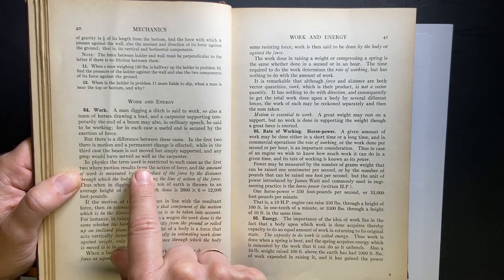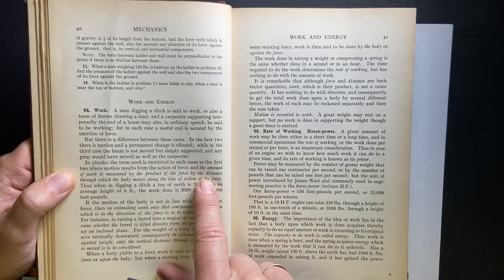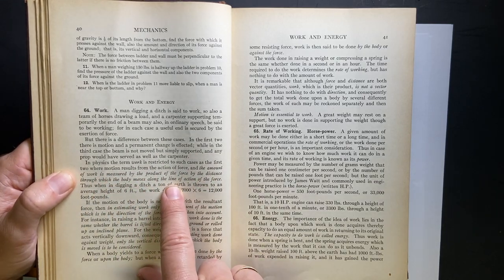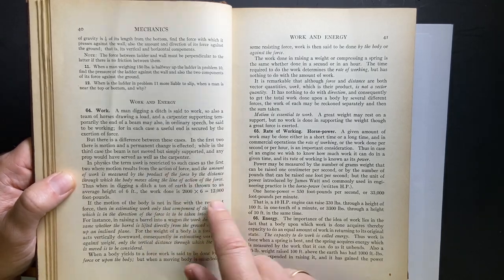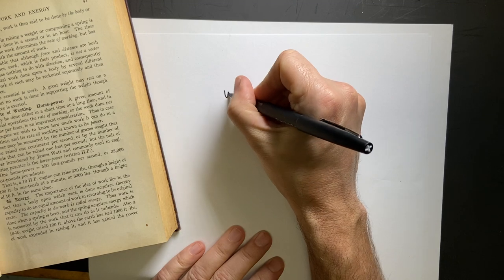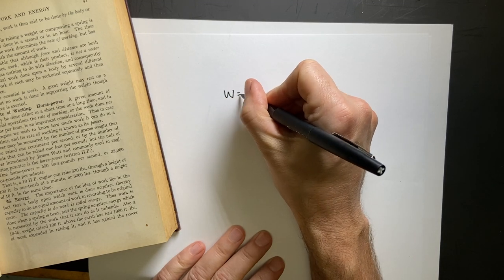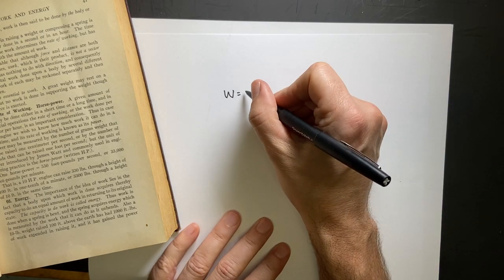But then it says there's a difference between these cases and its motion. And it defines work as the amount is measured as a product of the force by the distance through which the body moves along a line of action of the force. This is how we would define work, right? There's two ways.